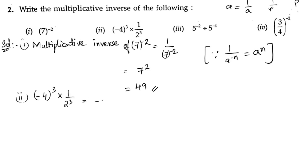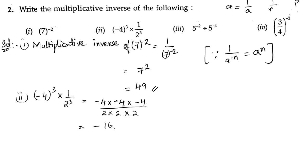First, minus 4 to the power of 3 means we have to write it 3 times: minus 4 into minus 4 into minus 4, by 2 into 2 into 2. Minus appears an odd number of times — 3 times — so we will get minus. Minus into minus is plus, plus into minus is minus. 4 fours are 16, 16 into 4 gives 64.